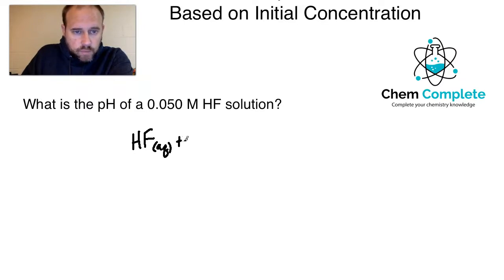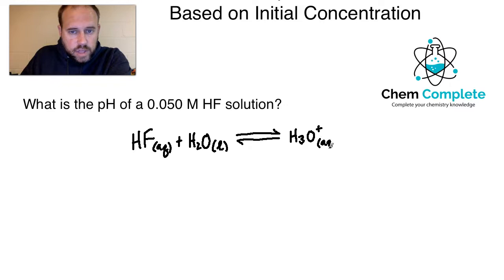That means that it's going to have water around. Now the water we would represent as a liquid. And remember that when we are doing equilibrium problems, liquids do not appear in the equilibrium expression. Solids and liquids are left out of that. So what would that create? Well, it's going to create H3O plus. And it will also create the conjugate base, which would be F minus. That's our conjugate base there.